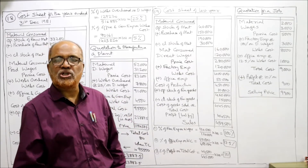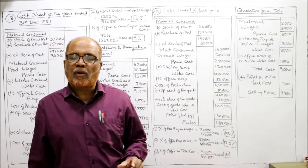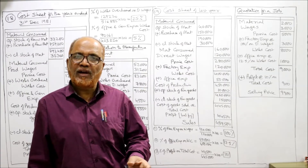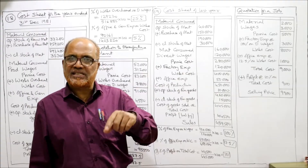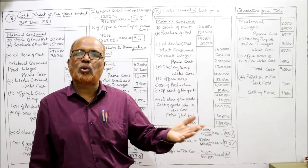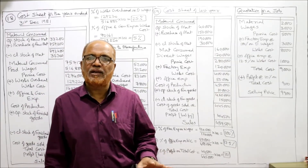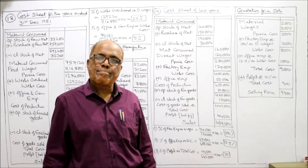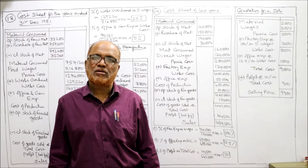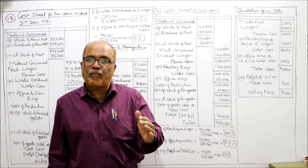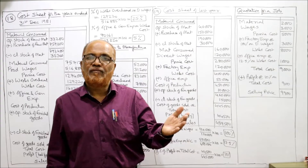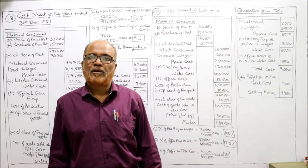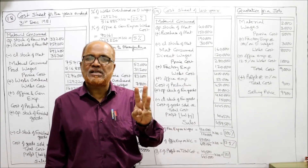First we make the cost sheet of last year. One new point is there: in the previous problem, profit percentage was given at 20% on selling price. But this is the first problem where how much profit we have to charge is not specified. Then whatever percentage of profit on total cost which we earned last year, that percentage we apply for the quotation. So from last year's cost sheet we calculate three percentages.